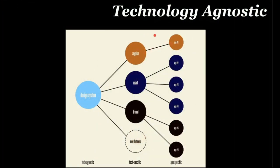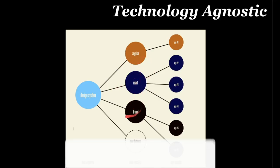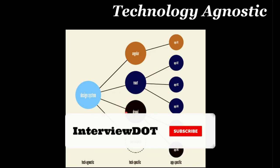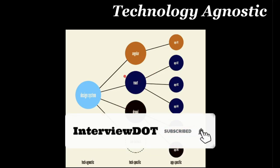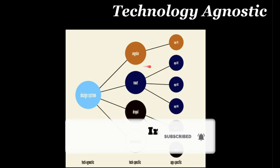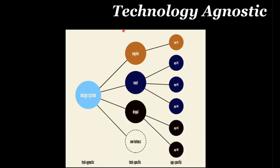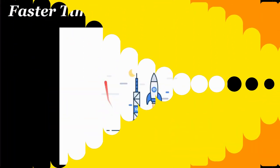The next benefit of microservice architecture is being technology agnostic. When you have multiple microservices, for each microservice you can choose its own technology stack independently. That's why it is called technology agnostic.